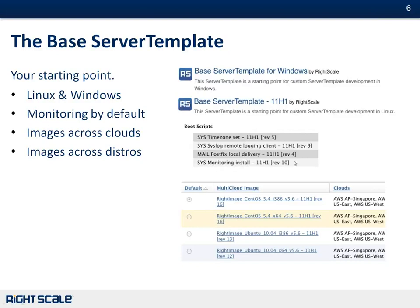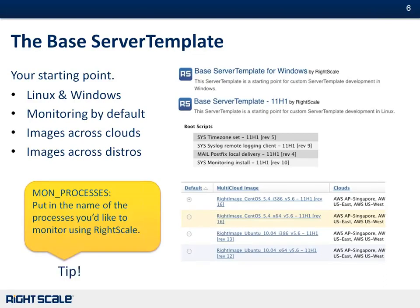We have some pretty basic scripts that pretty much everyone needs out of the box — most people want to monitor their machines, so we have a script that will allow you to monitor processes by default. Scripts allow you to not only automate your infrastructure and the configuration of the machine, but also pull out variable information that you don't want to hard-code in. MonProcesses is an input to the sysmonitor install — it's a variable on this script, and if we type in things like crond, sshd, or httpd, when the server starts up we will start monitoring those processes and send that information back to RightScale to display in the dashboard.